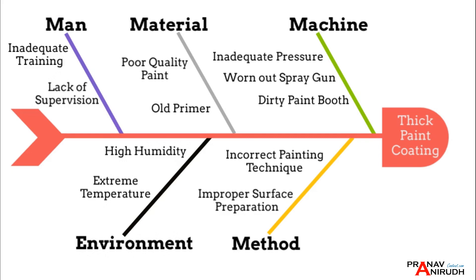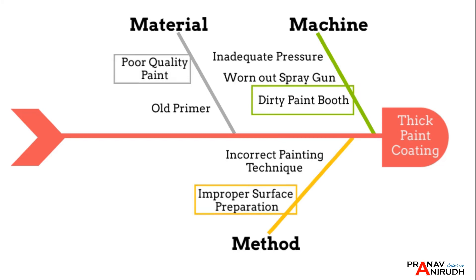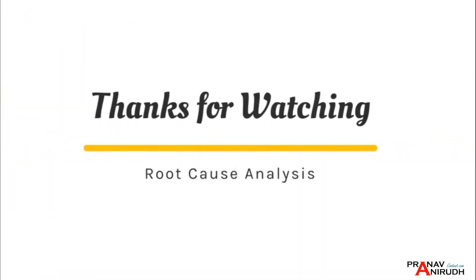For the Environment category, it could be high humidity or extreme temperature. For Man, it could be inadequate training or lack of supervision. After writing down all possible causes, review and analyze them. As new information is uncovered, refine the diagram by adding or removing causes as necessary. Use the information gathered from the Ishikawa diagram to identify the root cause — in this case, it may be a combination of poor paint quality, improper surface preparation, and a dirty paint booth. This is how the Ishikawa diagram guides the problem-solving process, allowing the team to focus on the most likely causes and determine the best solution. We hope this video will help you solve problems at your workplace using root cause analysis.